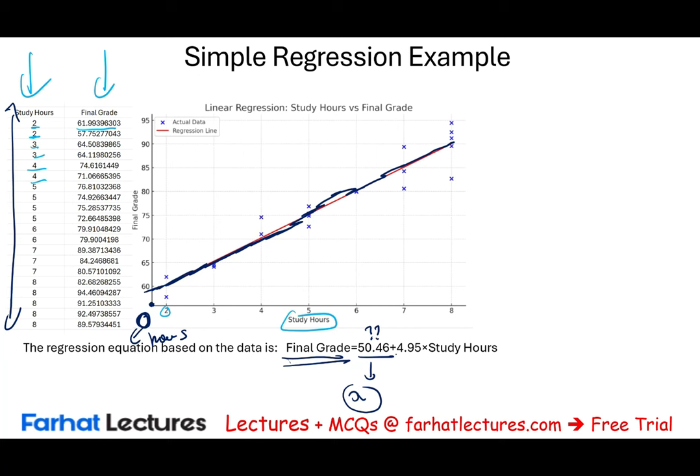The closer R-squared is to 1, the more fit the model is, and the more useful it is for predicting results. Don't confuse this with correlation, which goes from −1 to +1. R-squared goes from 0 — no relationship — to 1, a perfect fit. Now, some assumptions of the linear regression model: the linear relationship between x and y is valid only within what we call the relevant range.